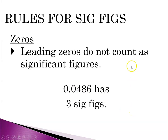A way to understand leading zeros: if I give you a penny, I have given you 1 cent — one one-hundredth of a dollar. If I asked you to express one one-hundredth as a decimal, you would write 0.01. The zero is just a placeholder, helping express that it is one-hundredth. So leading zeros — zeros on the left-hand side — are never significant.